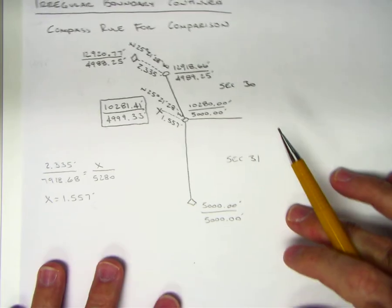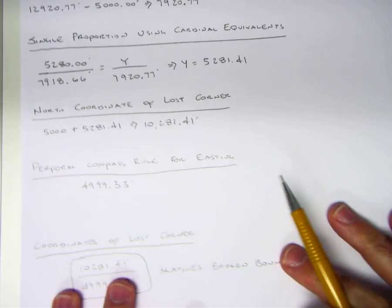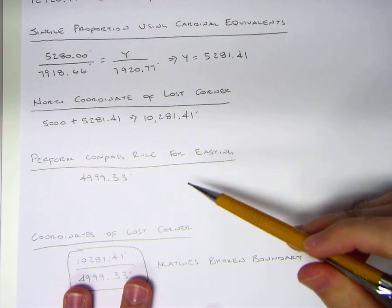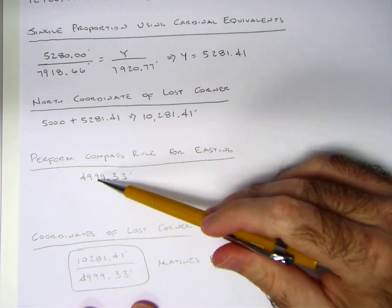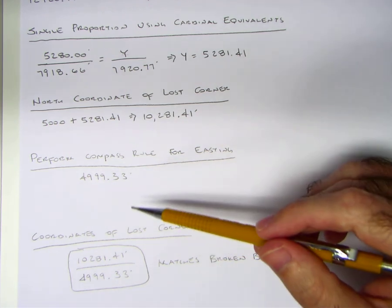The second part is, remember I just said that you use a compass rule east west in this particular example and so that would give you coordinates of 4999.33 and of course that's going to be the same as what we did with the compass rule.